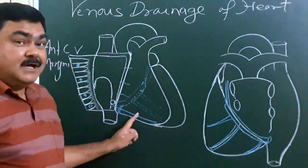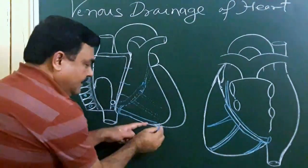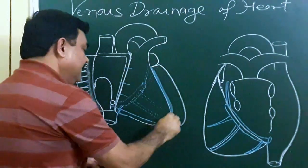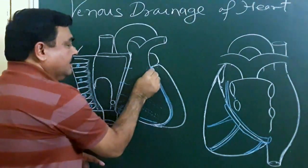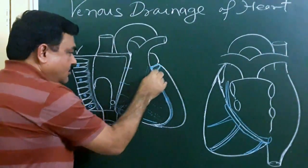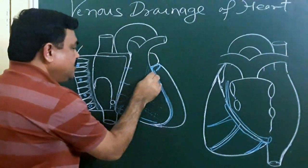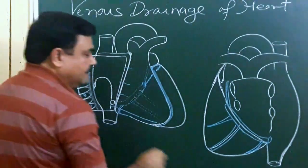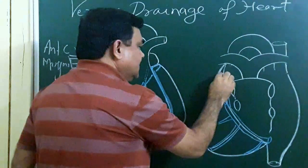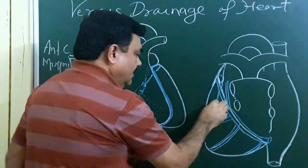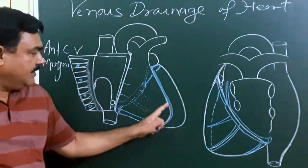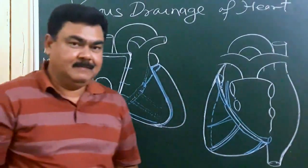And the other major vein is the great cardiac vein. It lies in the anterior interventricular groove. This is the great cardiac vein, and it turns into the left atrioventricular groove, then runs into the left posterior atrioventricular groove and opens into the coronary sinus. Here in this diagram you can see the position of the great cardiac vein — it turns like this. This anterior interventricular vein is the great cardiac vein, which opens into the coronary sinus.